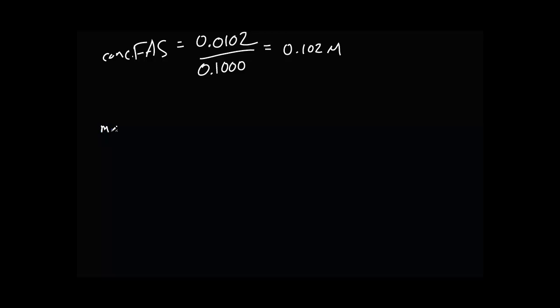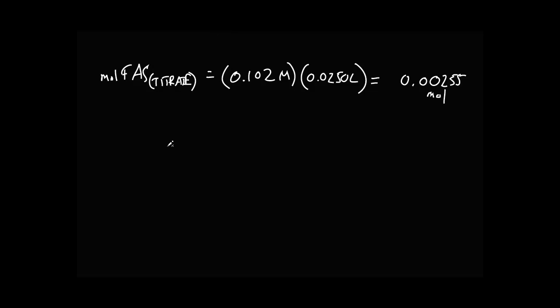And well, how many moles of FAS did we use to titrate? We had an original concentration of 0.0102 molar, and we took 25 mL, so it was 0.0250 liters if you were hopefully accurate with your buret. So you have three significant figures for each, so our answer should have three significant figures, and that's going to equal 0.00255 mole. And that was in our Erlenmeyer flask, then we added our sulfuric acid and then we added our titrant.